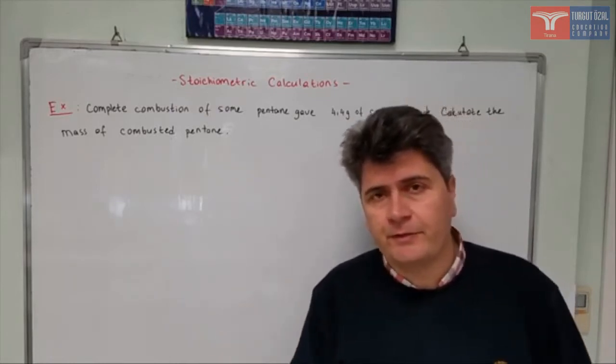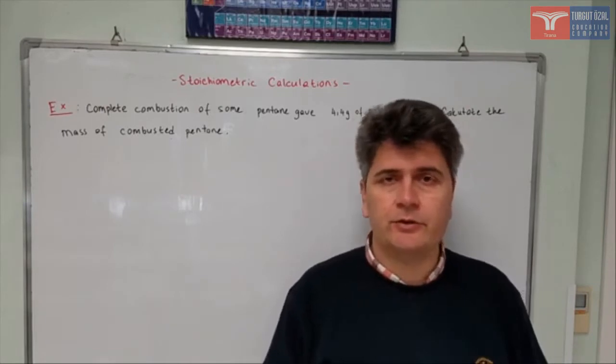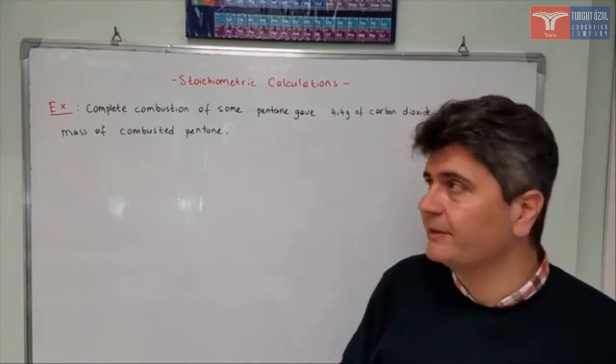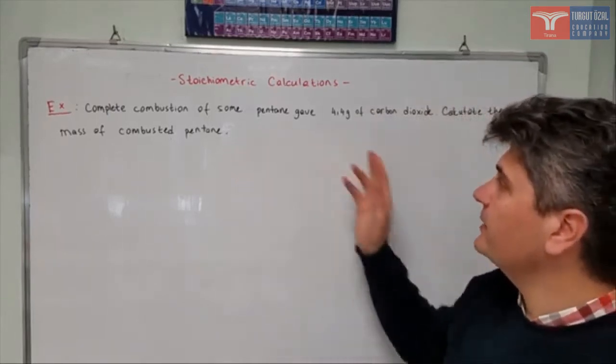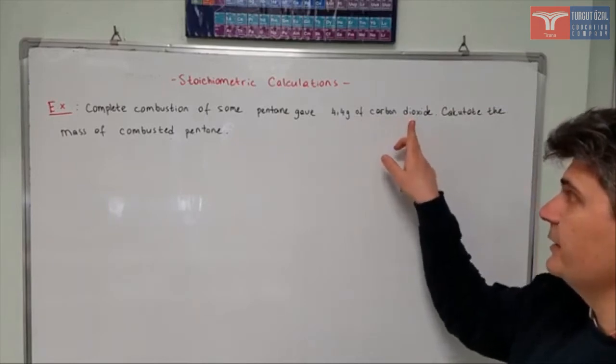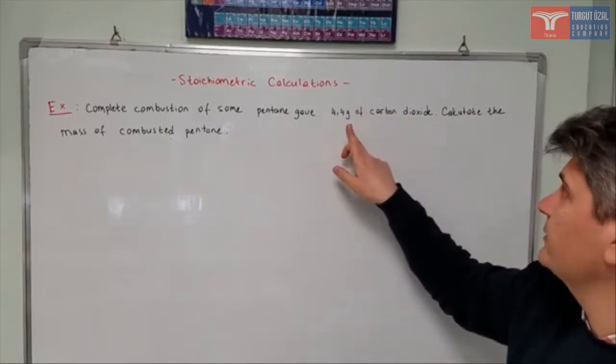There are actually two different ways to solve this, and I'll try to show you both ways. Let's first try to understand what is given and what is asked. It says complete combustion of some pentane gave 4.4 grams of carbon dioxide. So it says grams, I know the mass of carbon dioxide.